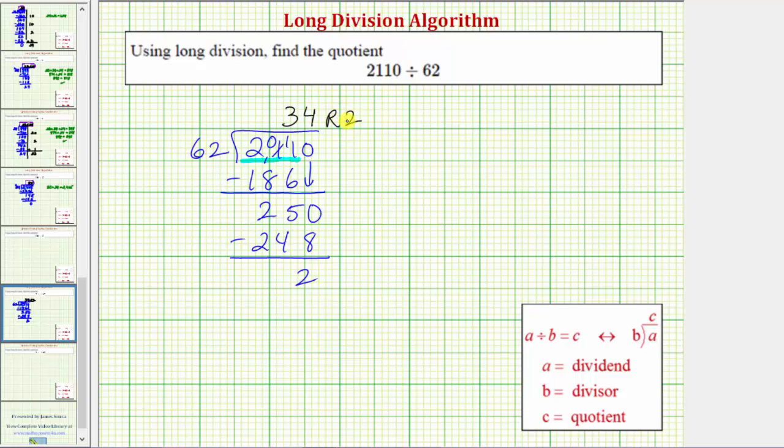Because we have a remainder, 62 does not divide evenly into 2110, and therefore 62 is not a factor of 2110. Another connection we should make is that 34 times 62 plus the remainder of 2 equals the dividend of 2110. If we simplify the left side, 34 times 62 equals 2108, and 2108 plus 2 does equal 2110.